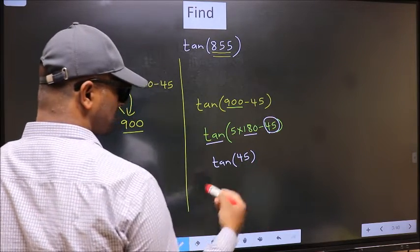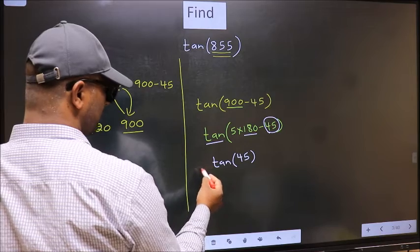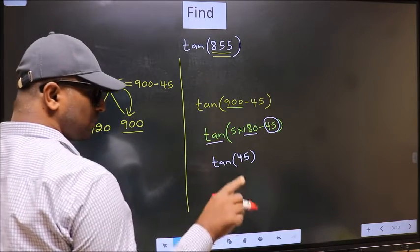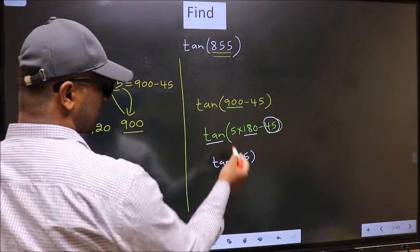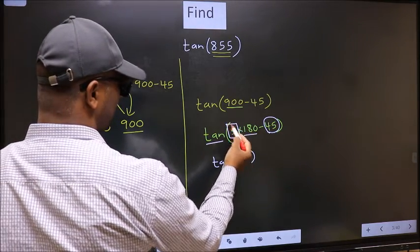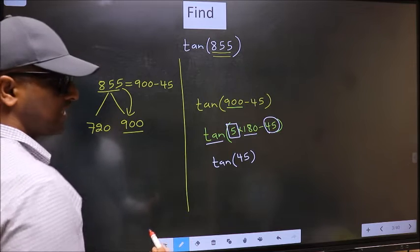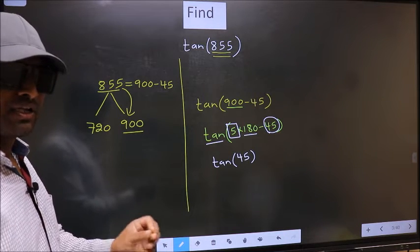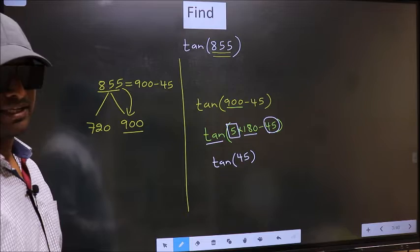Now the question is, will we get here plus or minus? To answer that, we should look at the number before 180. That is 5. And 5 is odd.